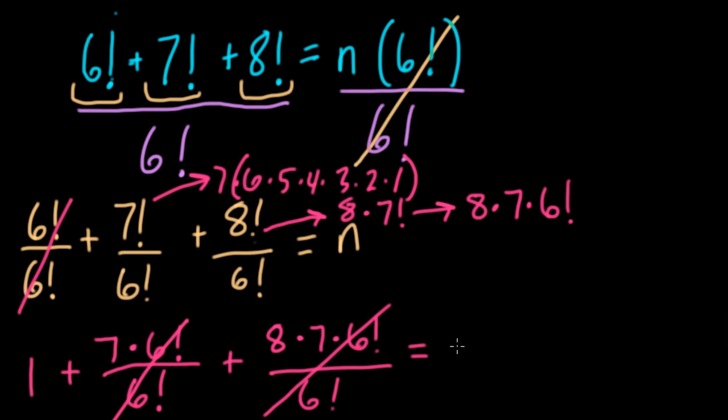So adding these together, we have 1 plus 7 plus 8 times 7 is 56. Add these up: 7 and 1 is 8, 8 plus 56 is 64. So here, n equals 64.